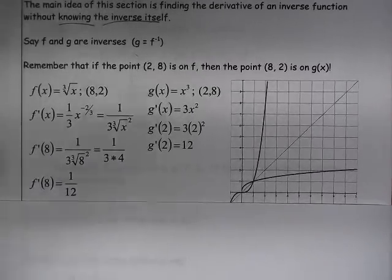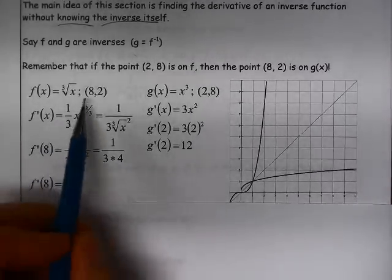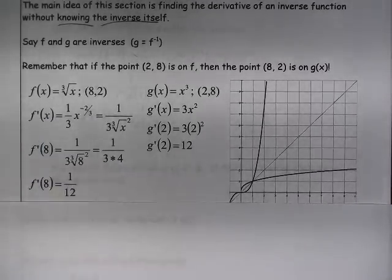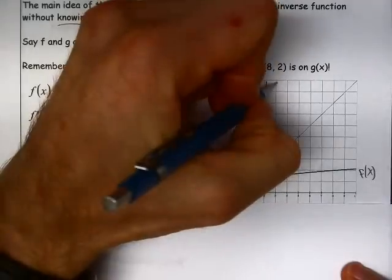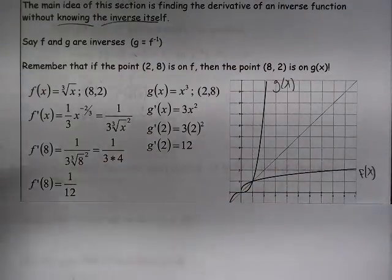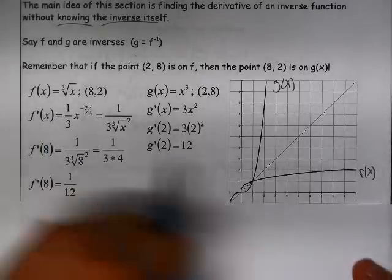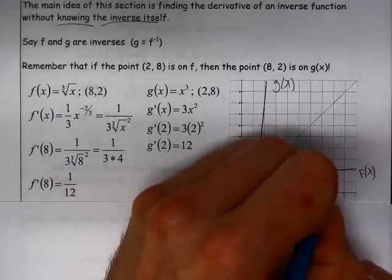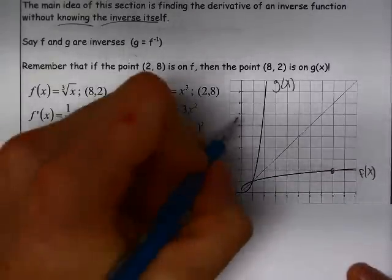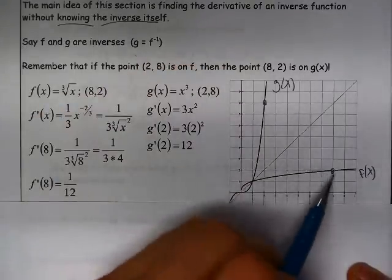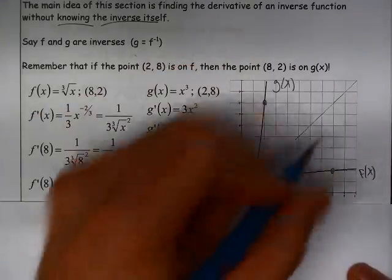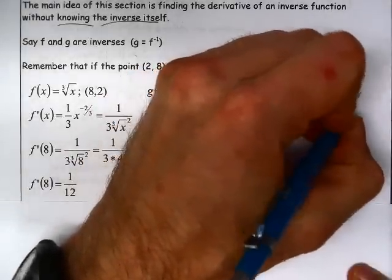I'm going to do that so that I can show you this graph. If I look at the point (8,2), here is f of x and here is g of x. If I look at the point (8,2) on f of x, it's out here, and the point (2,8) on g of x is there. So you can see that these functions are reflections of one another across the line y equals x.